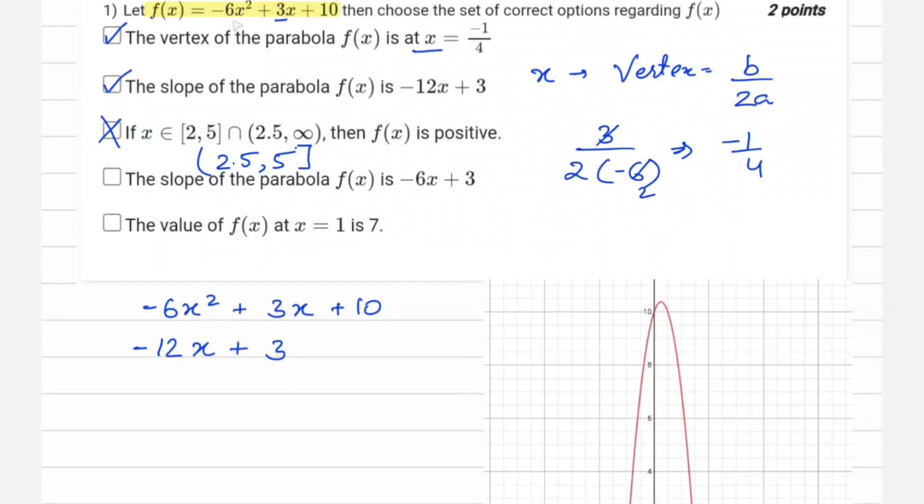Also we know that the coefficient of x² is negative, so the graph would be downward facing. The slope of parabola f(x) is... this also comes out to be wrong as we have already found the slope.